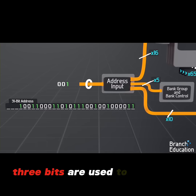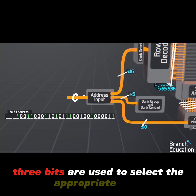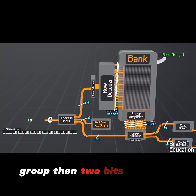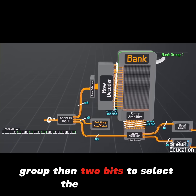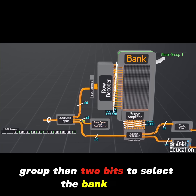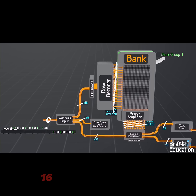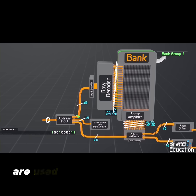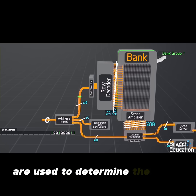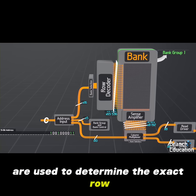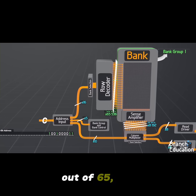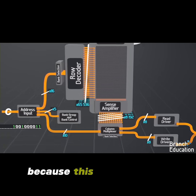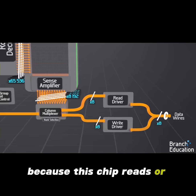3 bits are used to select the appropriate bank group, then 2 bits to select the bank. Next, 16 bits of the address are used to determine the exact row out of 65,000.